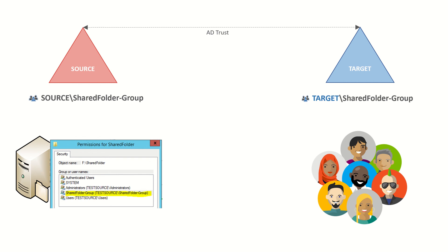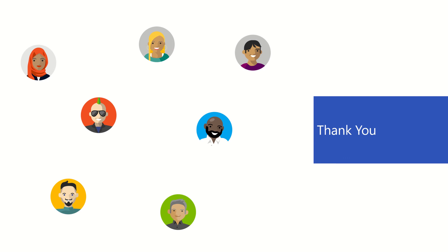At some time in the future, when you migrate your apps over to the target forest, you can update them to use the target group. But at this step in the journey — the coexistence phase — SID history provides a seamless experience for your end users and greatly simplifies migration planning for you. Thank you.